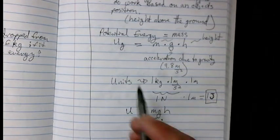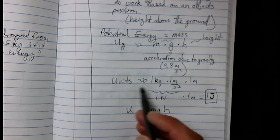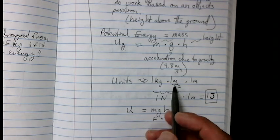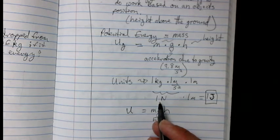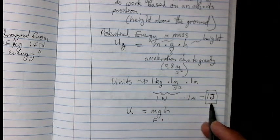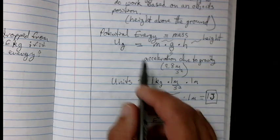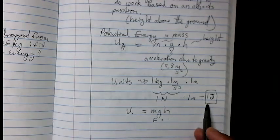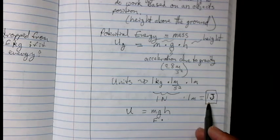The units for potential energy, if we have 1 kilogram times 1 meter per second squared, that's a force, which is 1 newton, times 1 meter, and 1 newton times 1 meter is 1 joule. So the units for potential energy is the joule, just like we had with work.